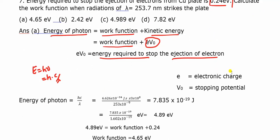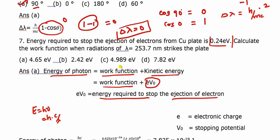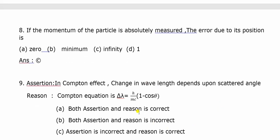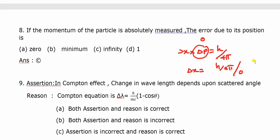This is a plus-two level question but it is conceptually important. The energy of the photon equals work function plus eV₀, where eV₀ is the energy required to stop the ejection of electrons. Question number 8: If the momentum of a particle is absolutely measured, the error in its position is? By the Heisenberg uncertainty principle, delta x times delta p equals h by 4 pi. If delta p equals zero, then delta x equals infinity. The answer is C.